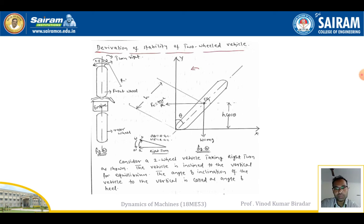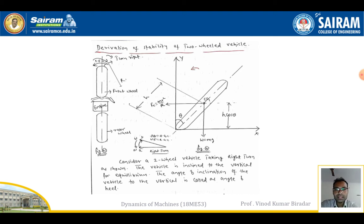The centrifugal force is mv²/R. The distance from the initial axis position to the engine speed position is assumed as height h. The distance from the axis to the center of gravity gives h·cosθ, where theta is the inclination angle between the y-axis and the shaft of the vehicle. Consider a two-wheel vehicle taking a right turn - the vehicle is inclined to the vertical for the equilibrium condition. The angle of inclination of the vehicle to the vertical is called the angle of heel.